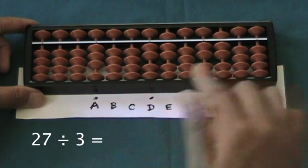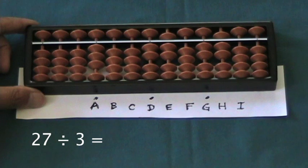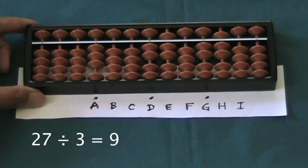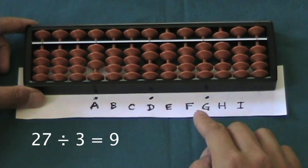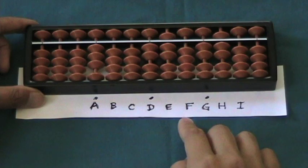Again using mental arithmetic. The 27, actually, is exactly 3 times 9. So, we're going to put 9, the quotient, on rod F, which is the third and final digit of the quotient.